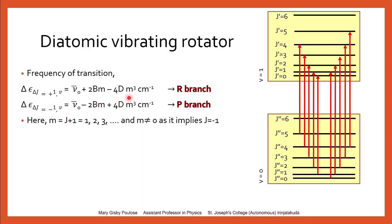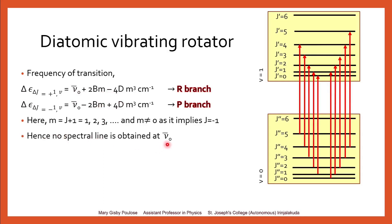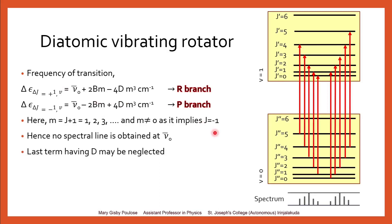If m cannot equal 0, we will never obtain an equation with only the value ν̃₀ — the terms never become zero. Hence, we do not expect or observe a spectral line at ν̃₀ in the spectrum. Furthermore, the value of D is very small compared to B and hence may be neglected.